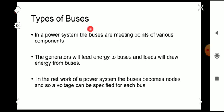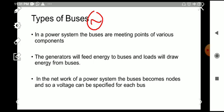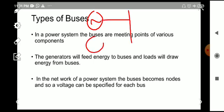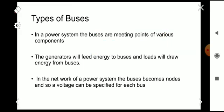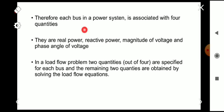Coming to the types of buses — in a power system, buses are the meeting points of various components. Here you can see two sources are connected to a bus and the load draws power from another bus. Generators will feed energy to buses and loads will draw energy from buses. In the network of a power system, the buses become nodes and so a voltage can be specified for each bus. Therefore, each bus in a power system is associated with four quantities.